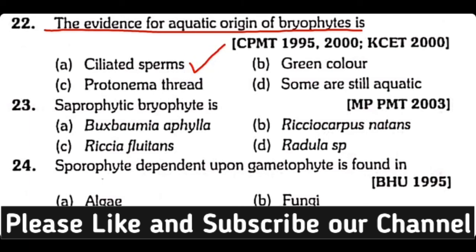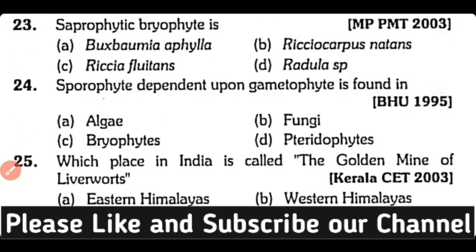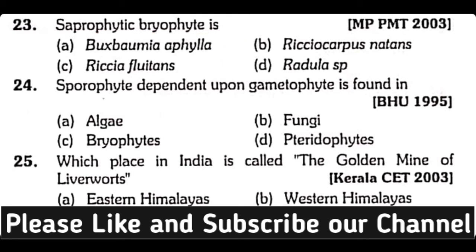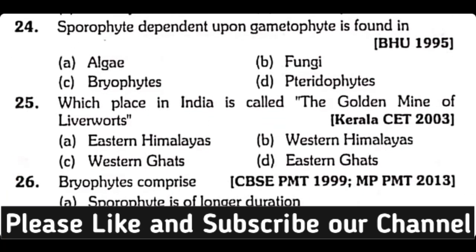Question number twenty-three: a saprophytic bryophyte is — Buxbaumia aphylla, Riella carpus natans, Riella fluitans, or Radula species? The correct answer is option A: Buxbaumia aphylla is a saprophytic bryophyte and it feeds on rotten wood.